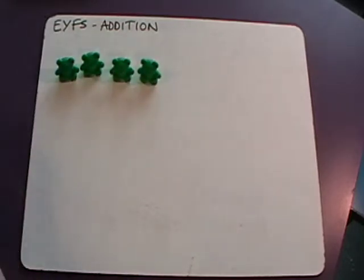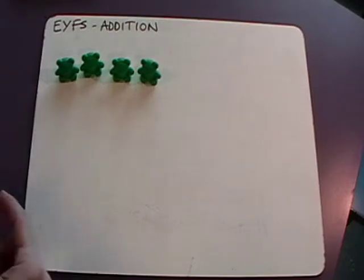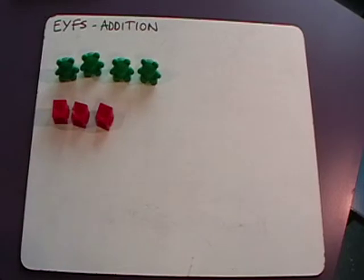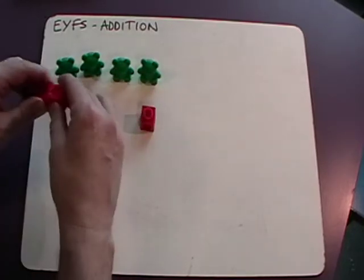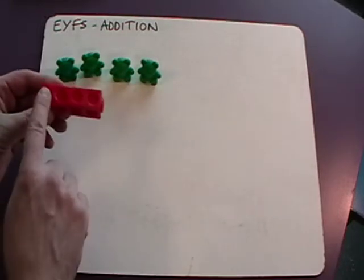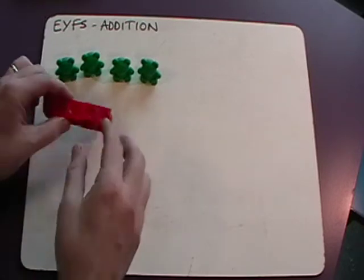We can also do this with other resources like Multilink. So we can have three Multilink cubes and we then add one more. With Multilink you can click the cubes together and then you can count them up: one, two, three, four cubes.